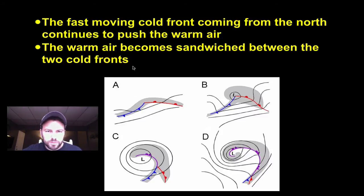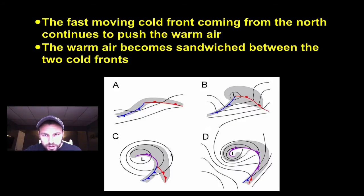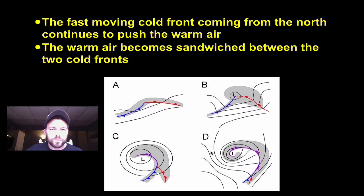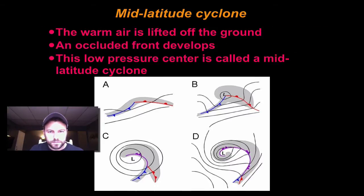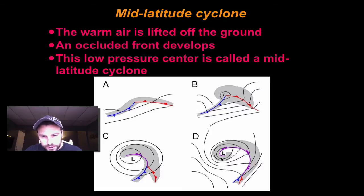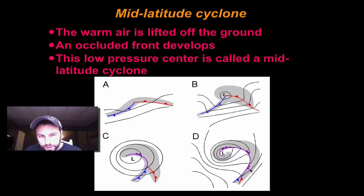The fast-moving cold front coming from the north continues to push the warm air down through. The warm air, as we can see in diagrams C and D, gets sandwiched between two cold fronts — or at least cold air and cool air. What happens is that warm air is lifted off the ground, just like we see here. And our occluded front develops, moving right through. This whole thing is called a mid-latitude cyclone.